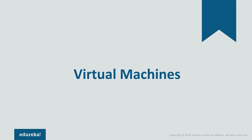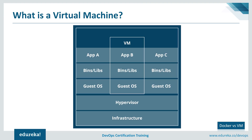Let's get started with the first topic: what is a virtual machine? A virtual machine is an emulation of a computer system. In simple terms, it makes it possible to run what appears to be many separate computers on hardware that is actually one computer. The operating systems and their applications share hardware resources from a single host server or from a pool of host servers.